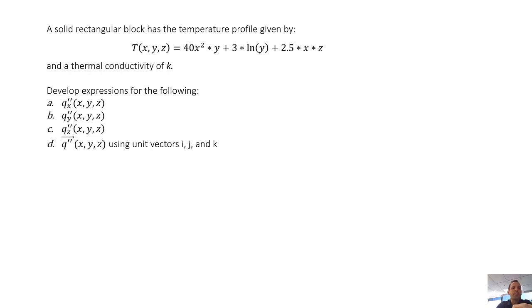This problem states that if we have a solid rectangular block with the temperature profile given by this equation, the temperature as a function of x, y, and z is equal to 40x² times y plus 3 times natural log of y plus 2.5 times x times z. If we know the thermal conductivity we want to develop expressions for the flux in each of those directions x, y, and z, and then we also want to put all those different flux components together to comprise the entire vector which would have both magnitude and direction.